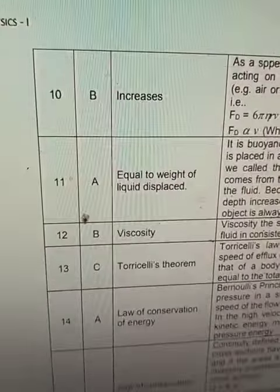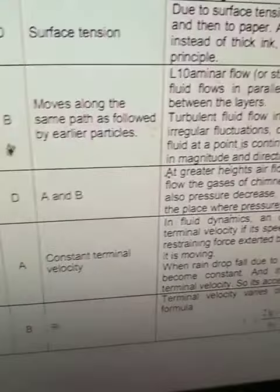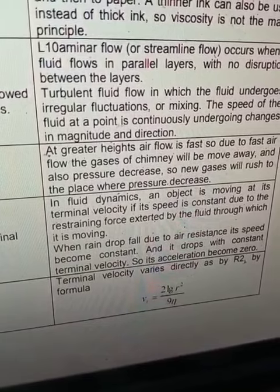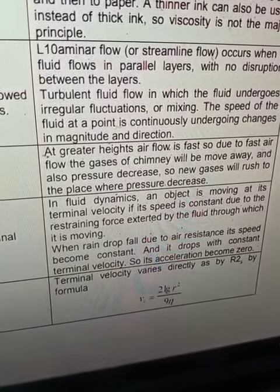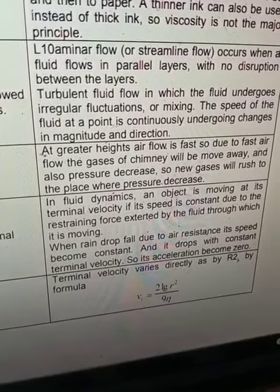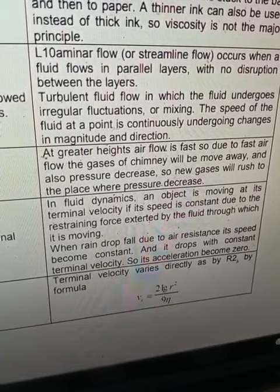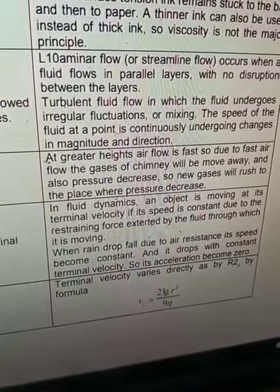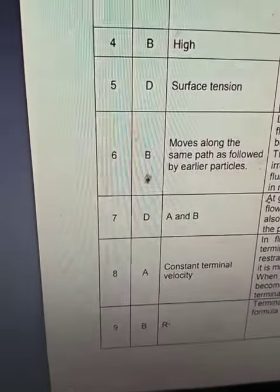Bada dhanso mcqs hai. So, ye bhi bhoat a hai. Iska answer hai constant terminal velocity. In fluid dynamics, an object is moving at its terminal velocity if its speed is constant due to the restraining force exerted by the fluid through which it is moving. When rain drop fall due to air resistance, its speed become constant and it drops with constant terminal velocity. So, its acceleration becomes zero. Correct answer.